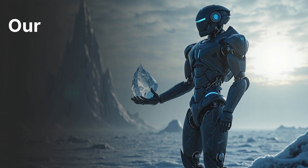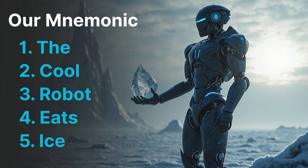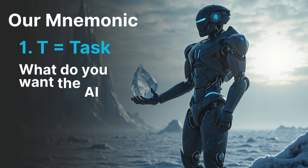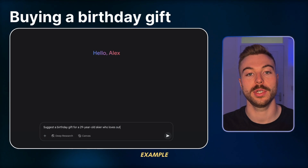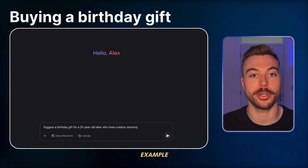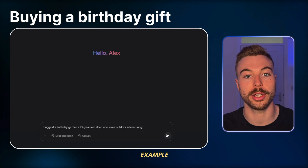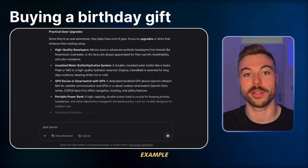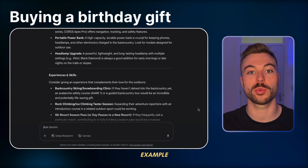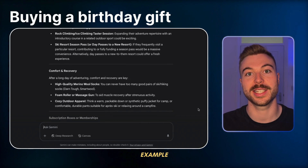That's quite a lot to remember, so here's a mnemonic that really sticks: 'The cool robot eats ice.' T for task - what do you want the AI to do? For example, 'suggest a birthday gift' is an okay prompt. But if we want to take it to the next level, let's write something like 'suggest a birthday gift for a 29-year-old skier who loves outdoor adventures.' Now we're talking - we've given it a really specific task with good information to get the output.